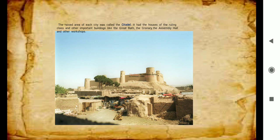Harappan cities were divided into two parts: the Citadel and the Lower Town. The Citadel was the raised area which had all the important buildings.